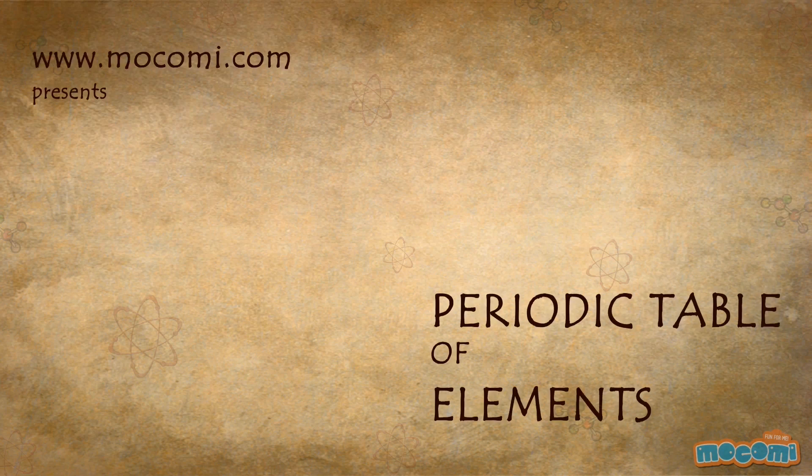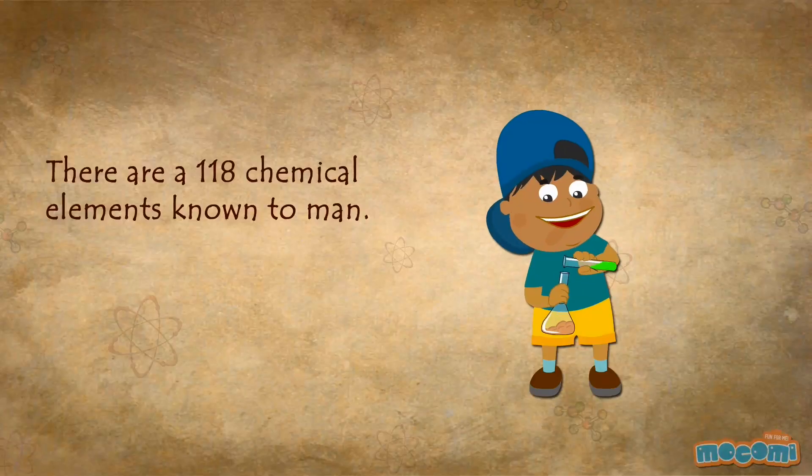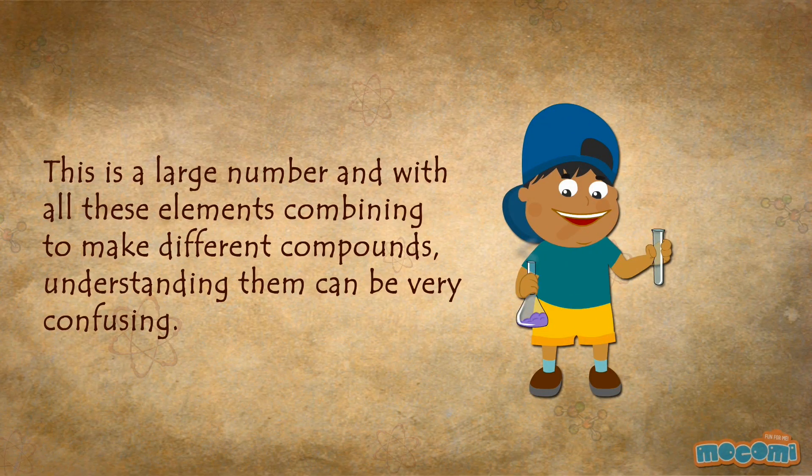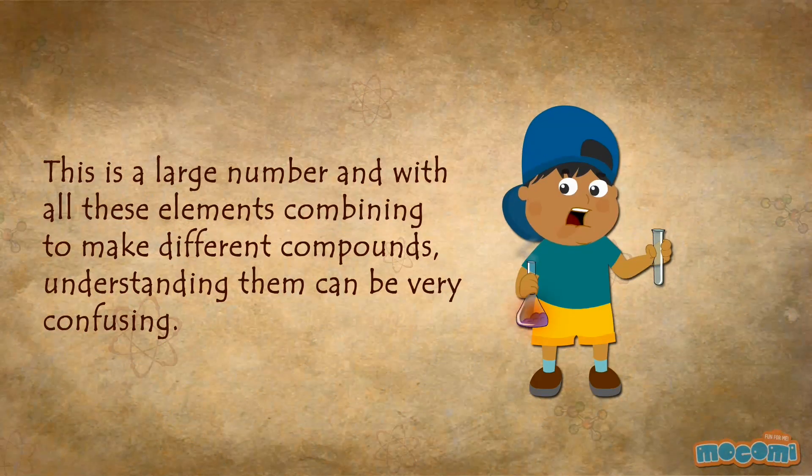The periodic table of elements. There are 118 chemical elements known to man. This is a large number and with all these elements combining to make different compounds, understanding them can be very confusing.